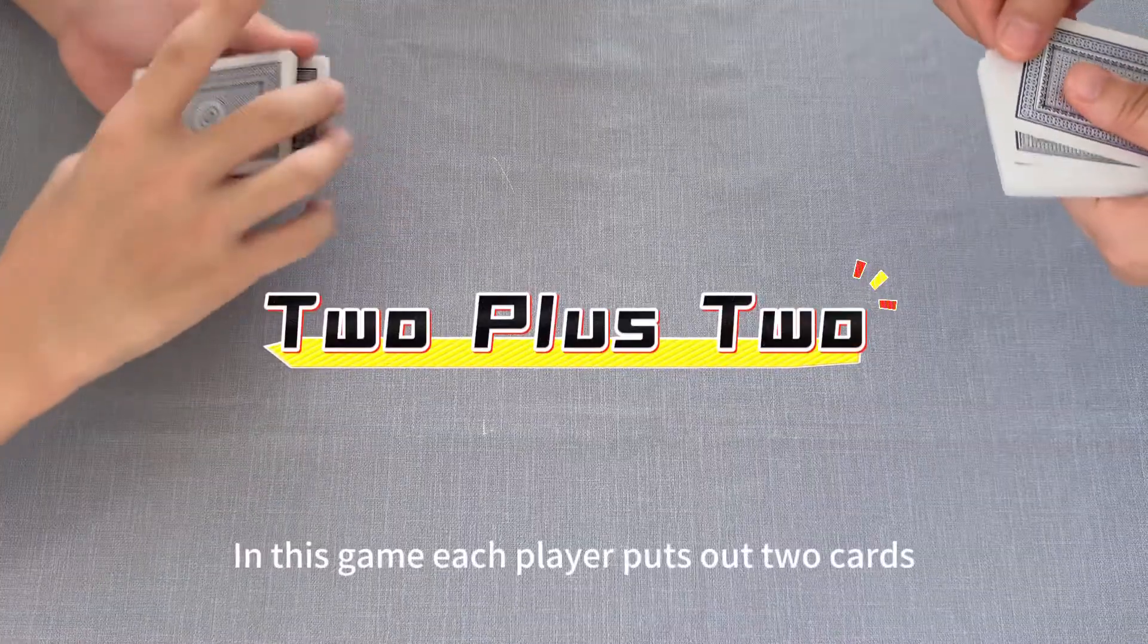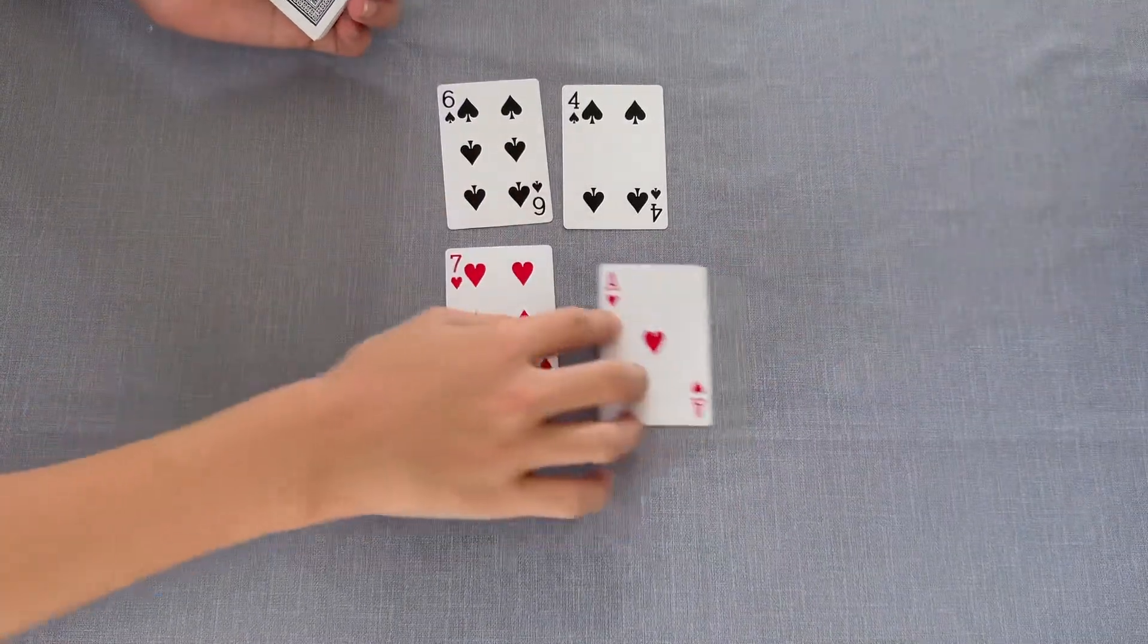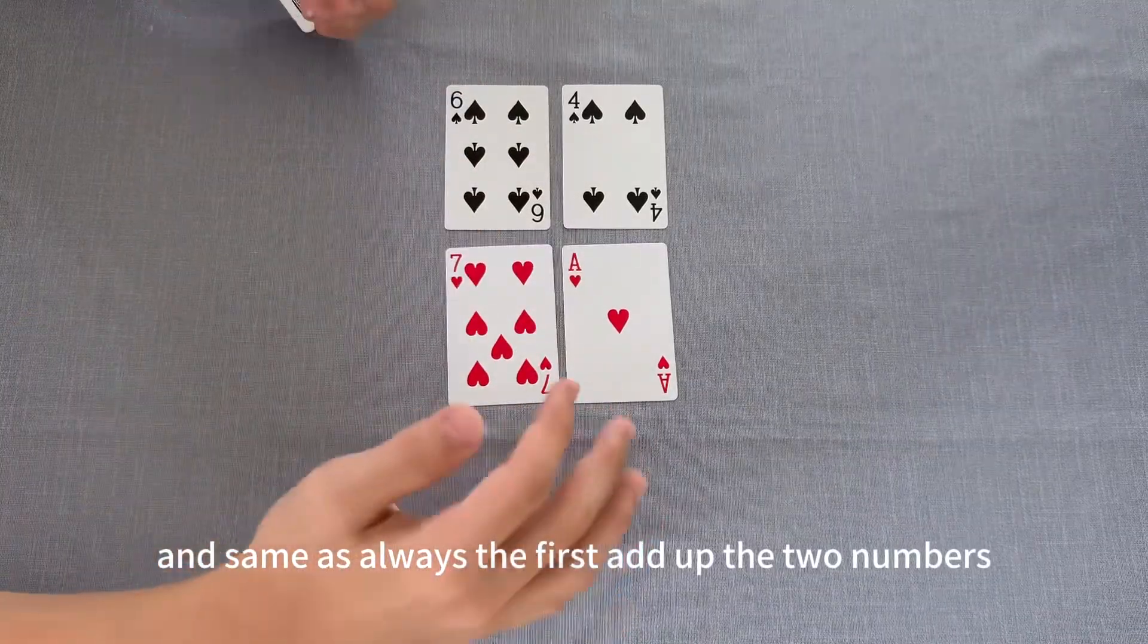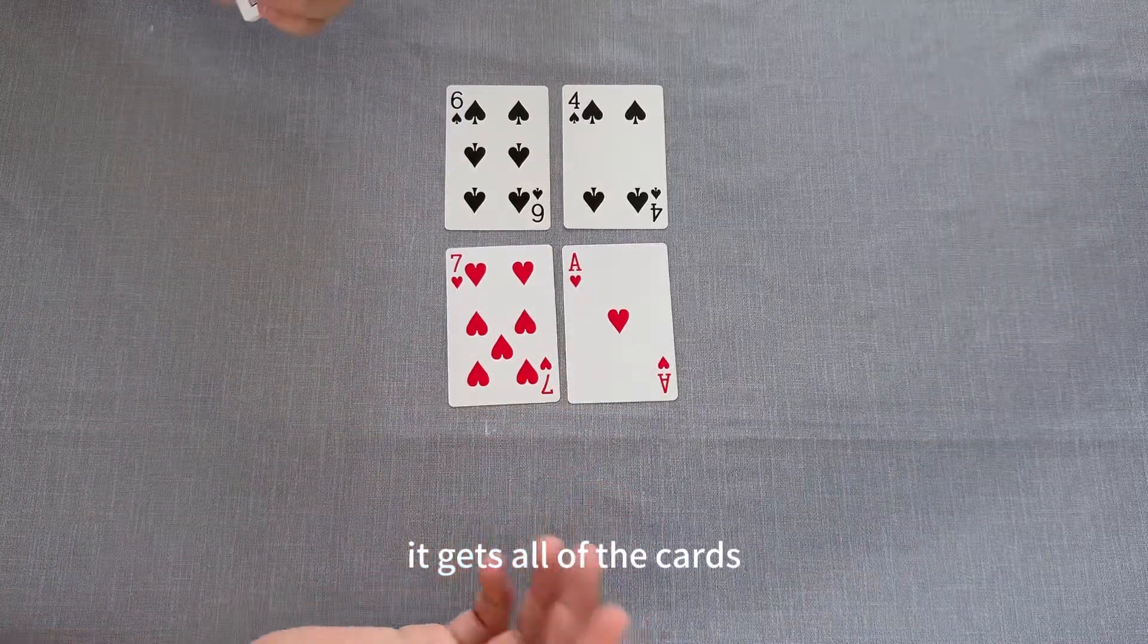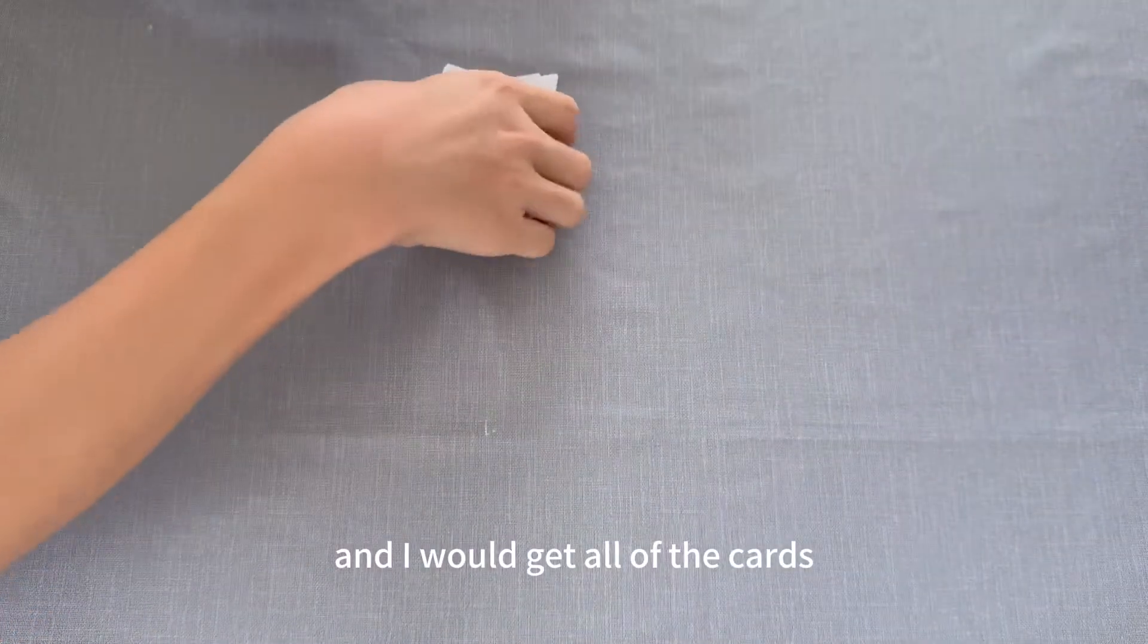2 plus 2. So, in this game, each player puts out two cards. And, same as always, the first to add up the two numbers gets all of the cards. So, in this case, it'd be 135, and I would get all of the cards.